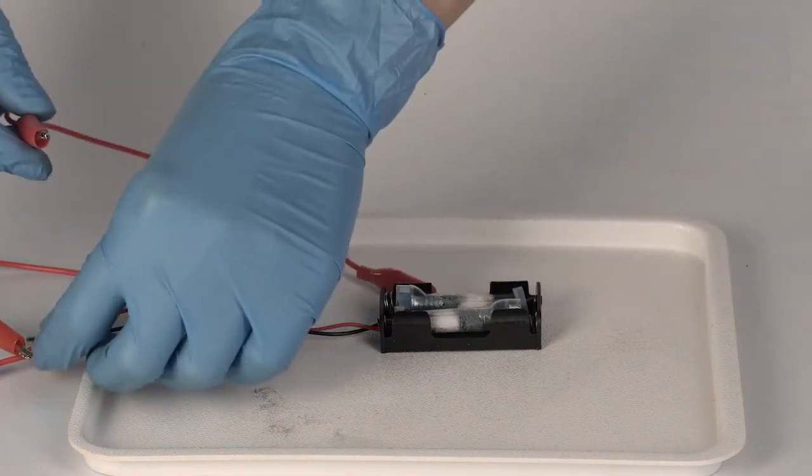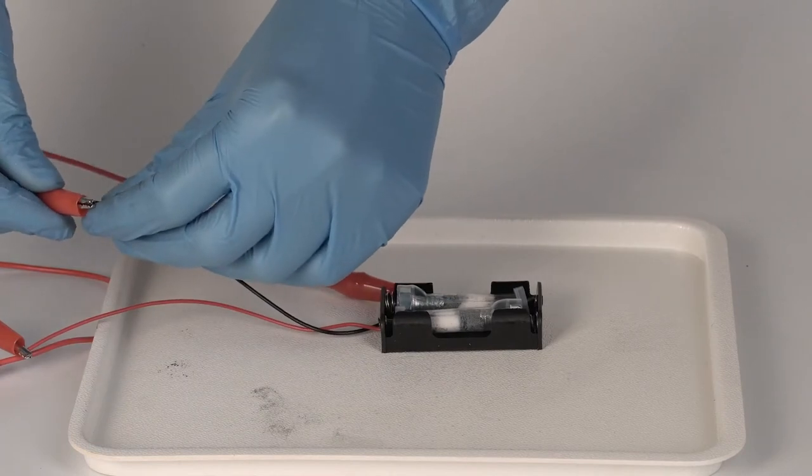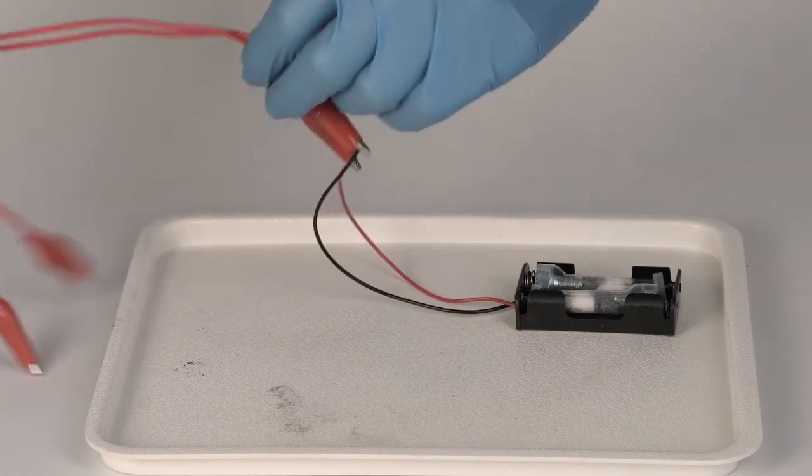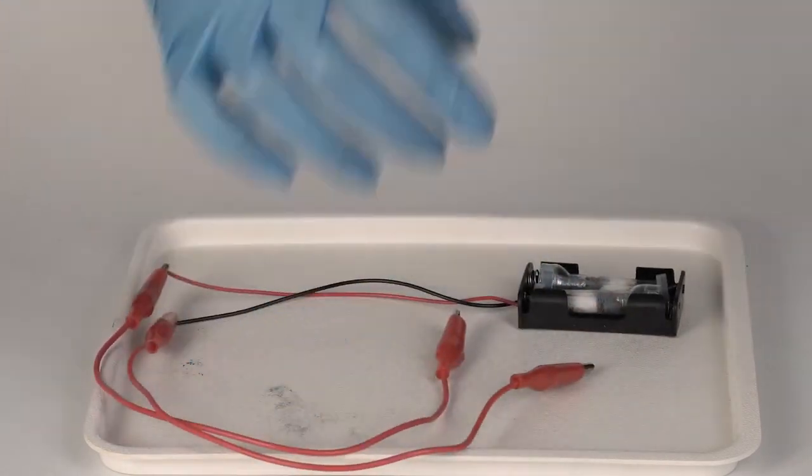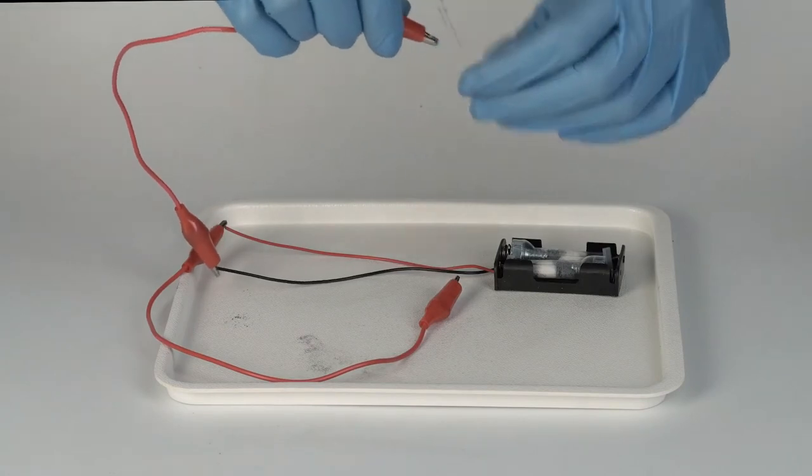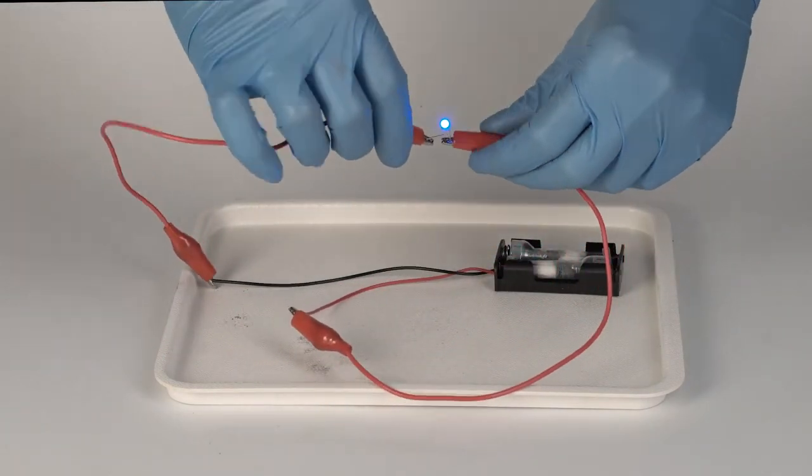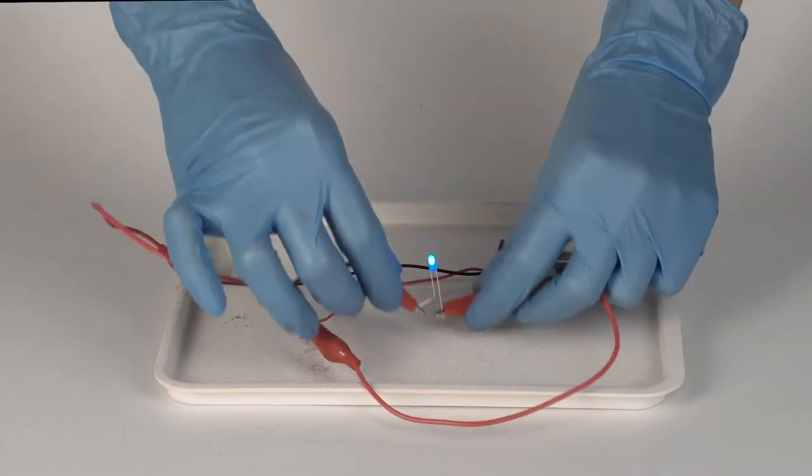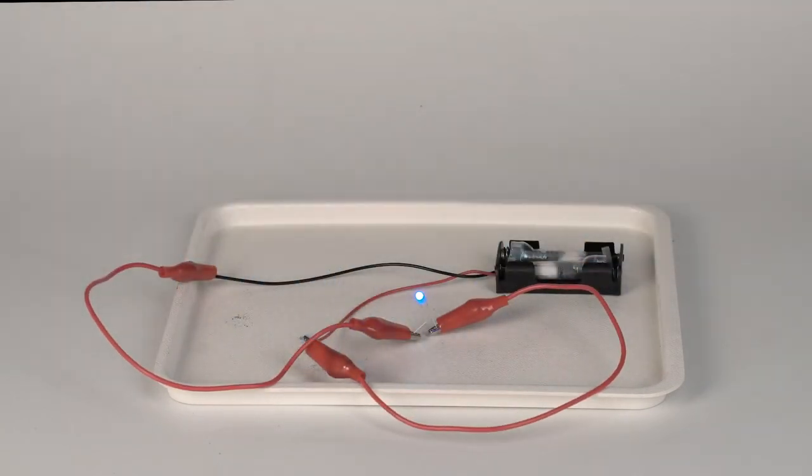Using the crocodile clip wires, connect the red wire to the long leg of the LED and the black wire to the short one. This will close the electric system and the electrons will begin moving from the zinc section through the LED to the manganese section. Zinc will be oxidizing, manganese oxide will be reducing, and the LED will glow.